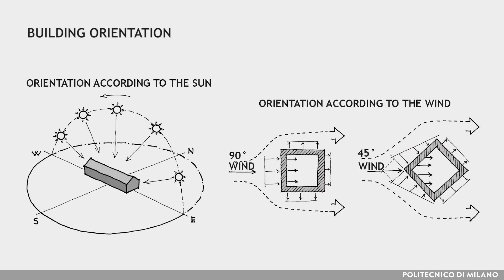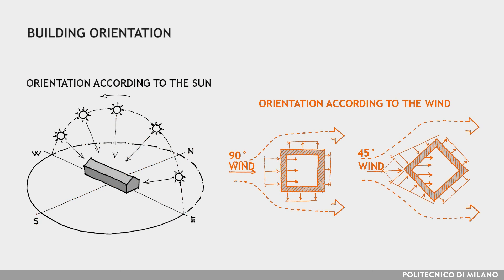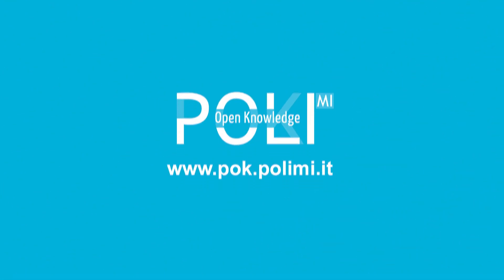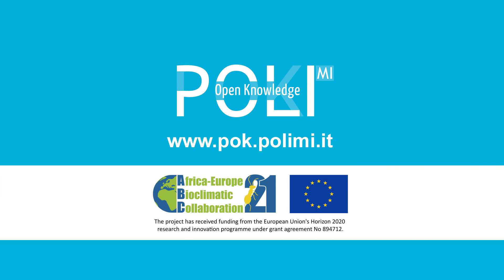Finally, the building orientation should be designed according to the sun and wind in the area. Building orientation in tropical climates is very critical due to the interaction with the sun and the wind, from which the energy performance largely depends. Generally, the basic rules are: minimize façades facing east and west, and take into account local prevailing winds because of their connection with natural ventilation.